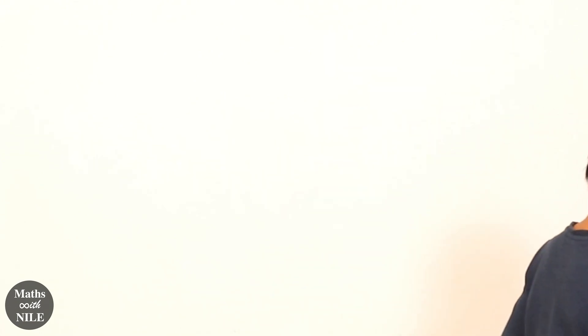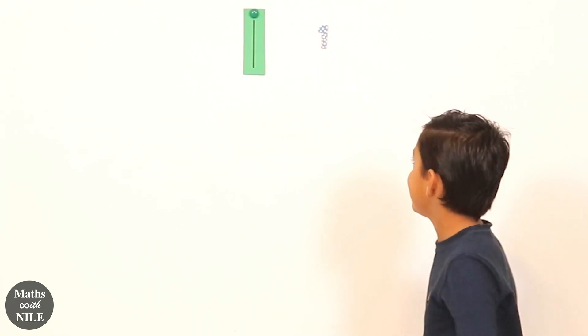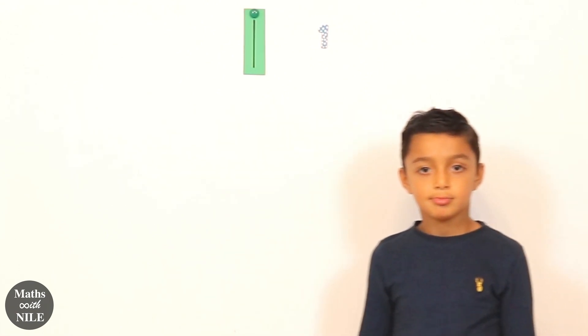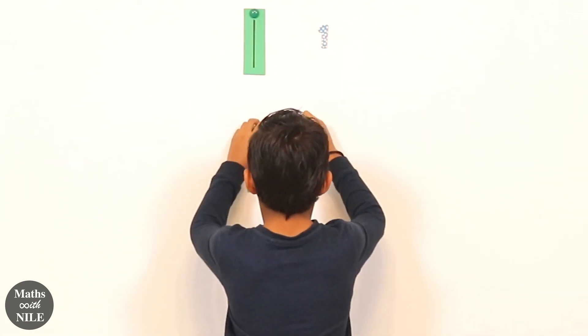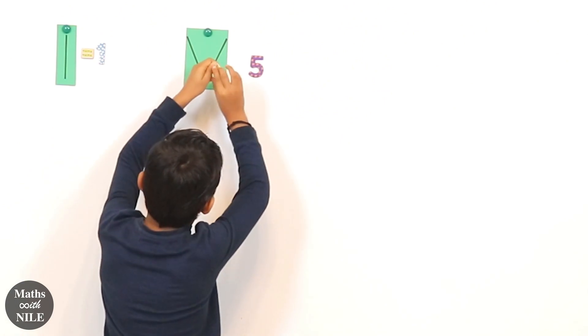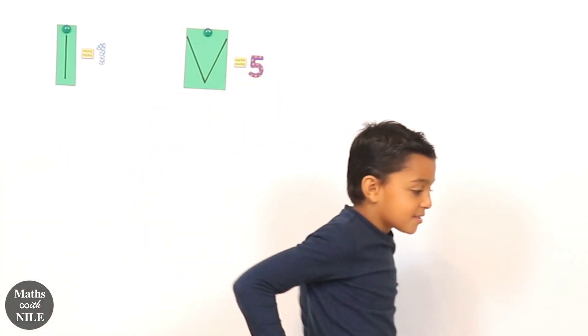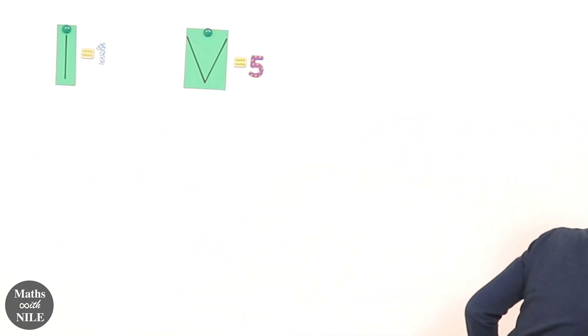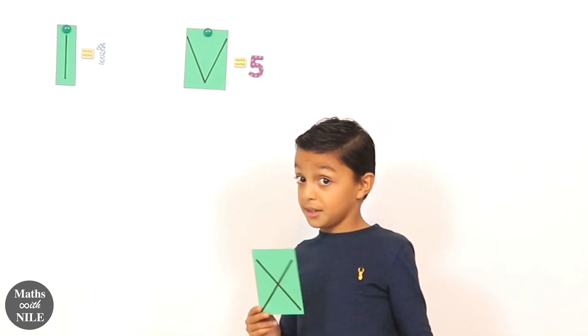So we're going to start with number one. What letter do we use for the value of one? I. So can you grab the I and the one and put it on the board for us? What about number five? And what letter do you know next? X equals 10. X equals 10. Very good.